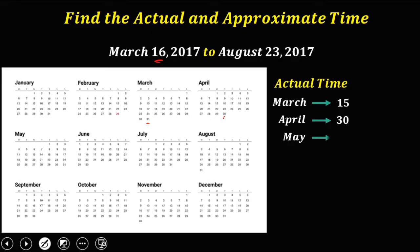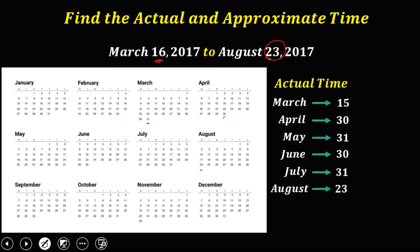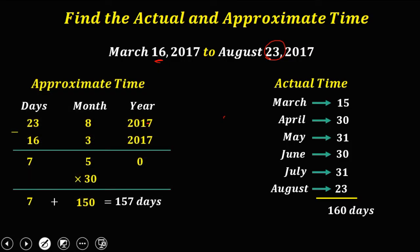April has 30 days, May has 31 days, June has 30 days, July has 31 days, and for August we only count 23 days since the period ends on August 23. Adding all the days: 15 + 30 + 31 + 30 + 31 + 23 equals 160 days for the actual time.